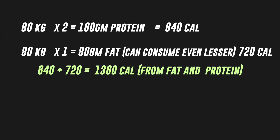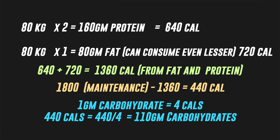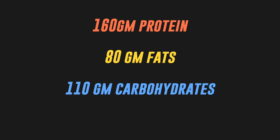With the remaining 440 calories, we get 110 grams of carbohydrates. So our final macros are: 160 grams of protein, 80 grams of fat, and 110 grams of carbohydrates. We calculate calories and cook accordingly.